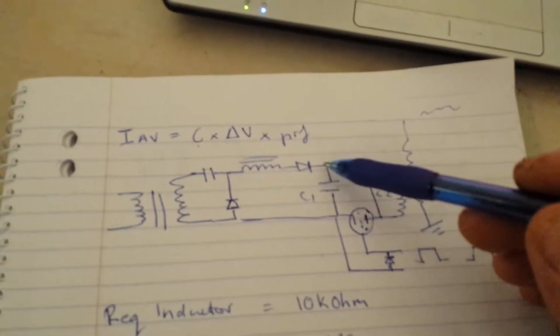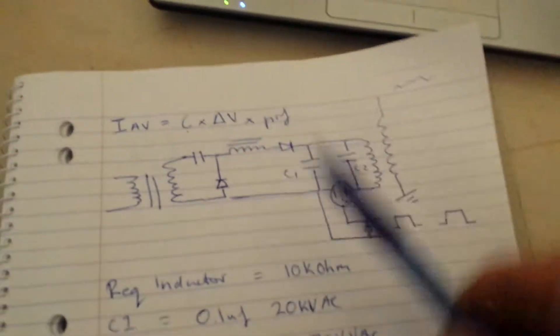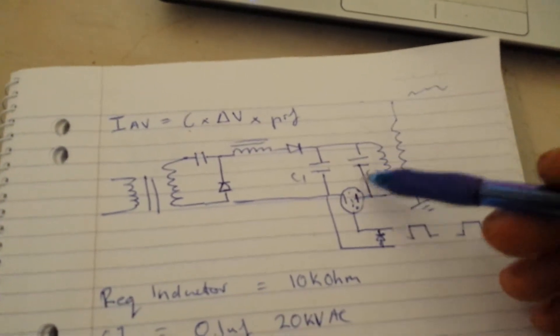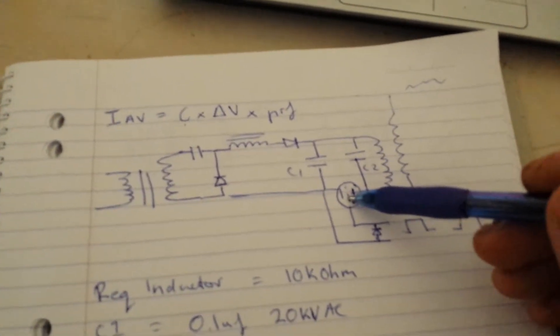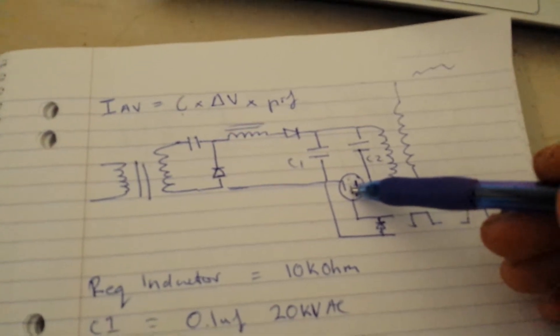The reason why you want to limit the amount of current is the thyrotrons only turn on. They don't turn off, so you need to remove the voltage that's going to them or reverse it completely, otherwise they'll keep going.